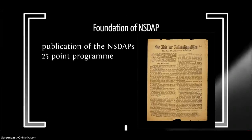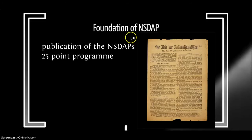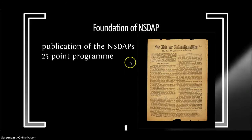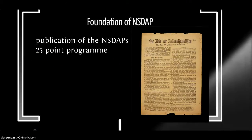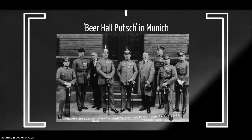1920 was the foundation of the Nazi Party. It's actually more correct to call them the National Socialist German Workers Party — 'Nazis' was a term used by their enemies. In 1920 there was also the publication of the Nazi 25-point programme, outlining their beliefs.